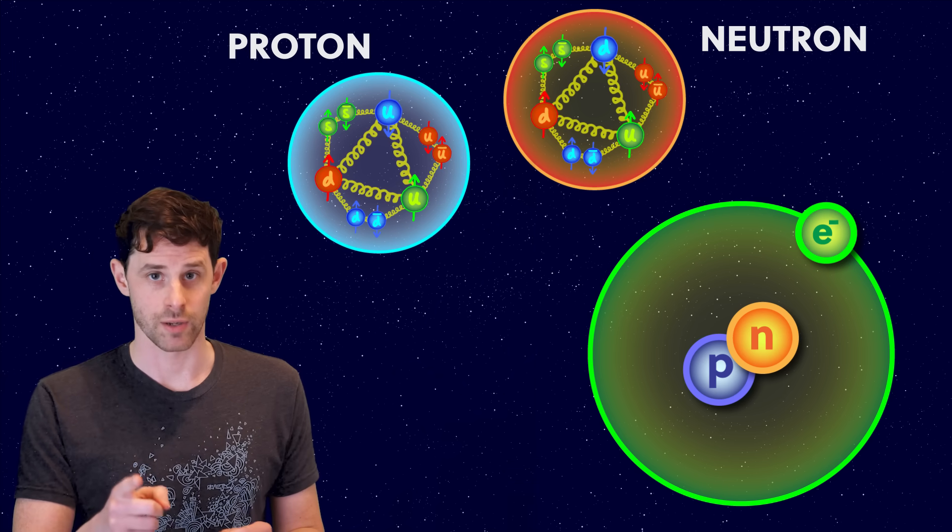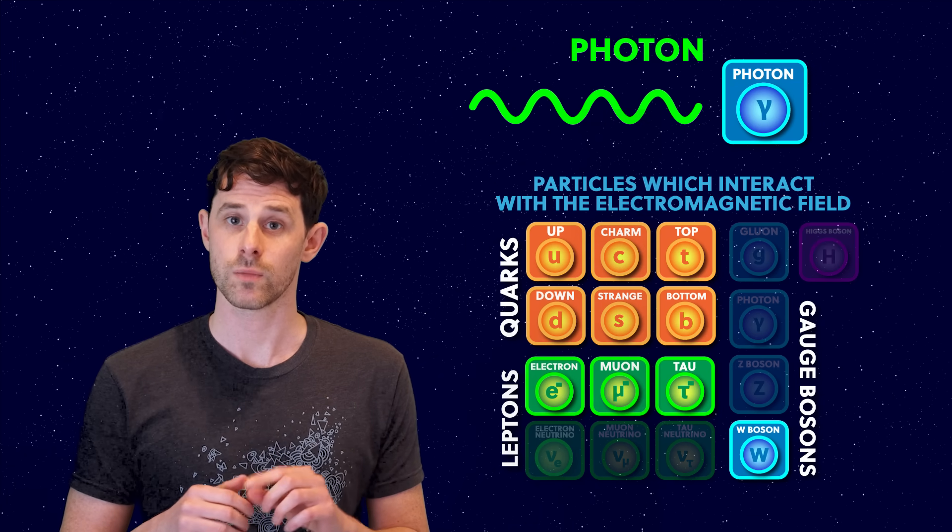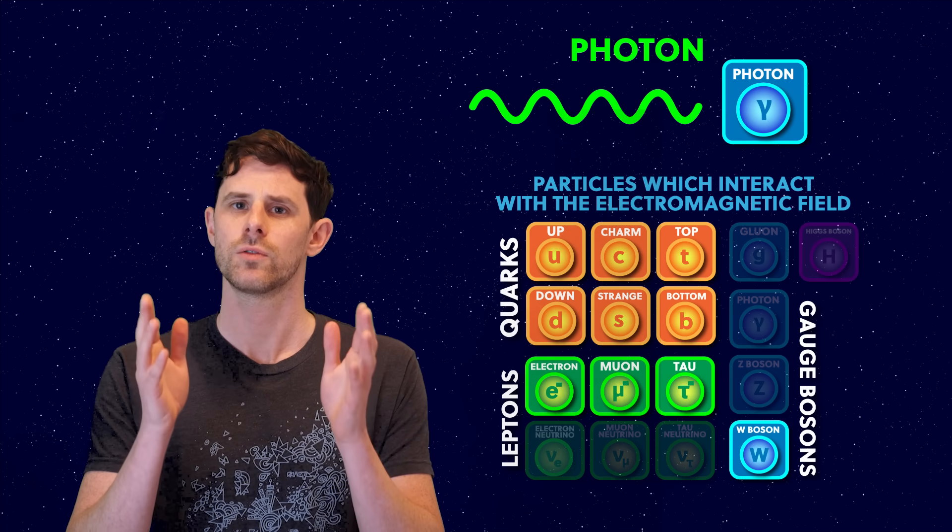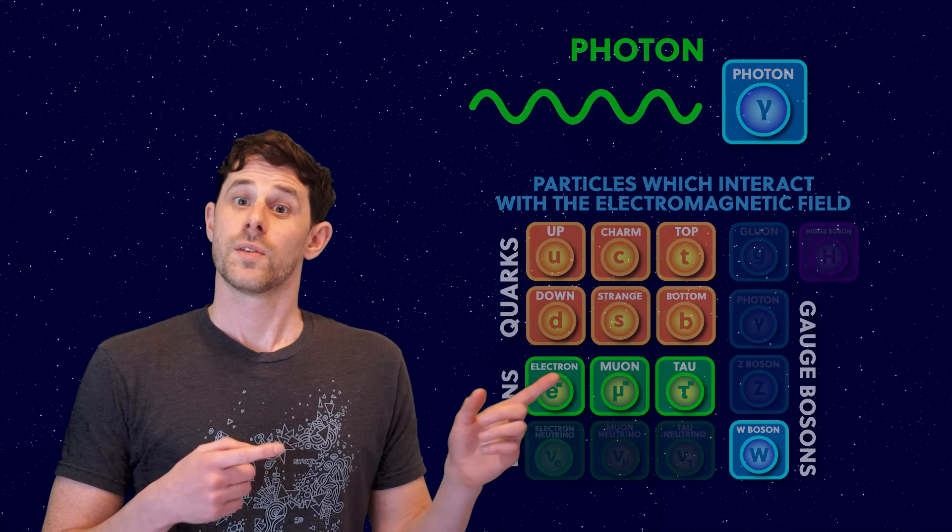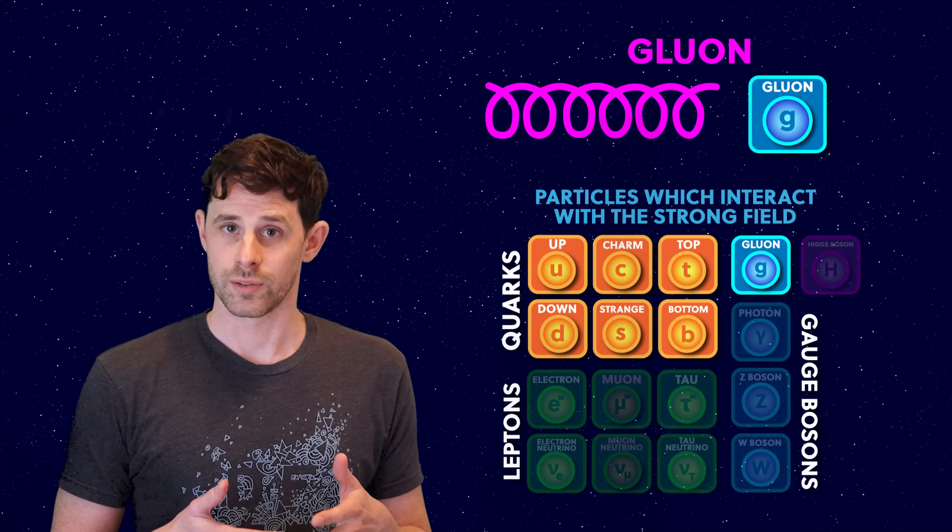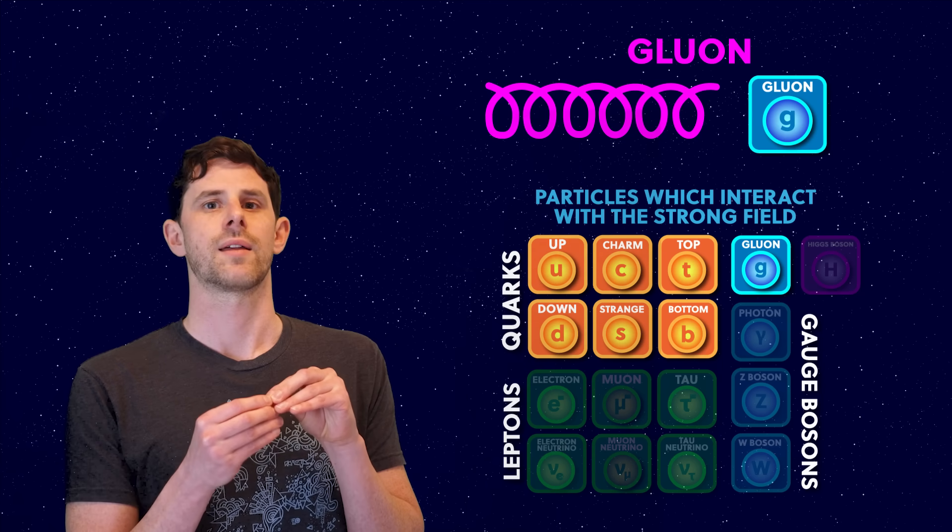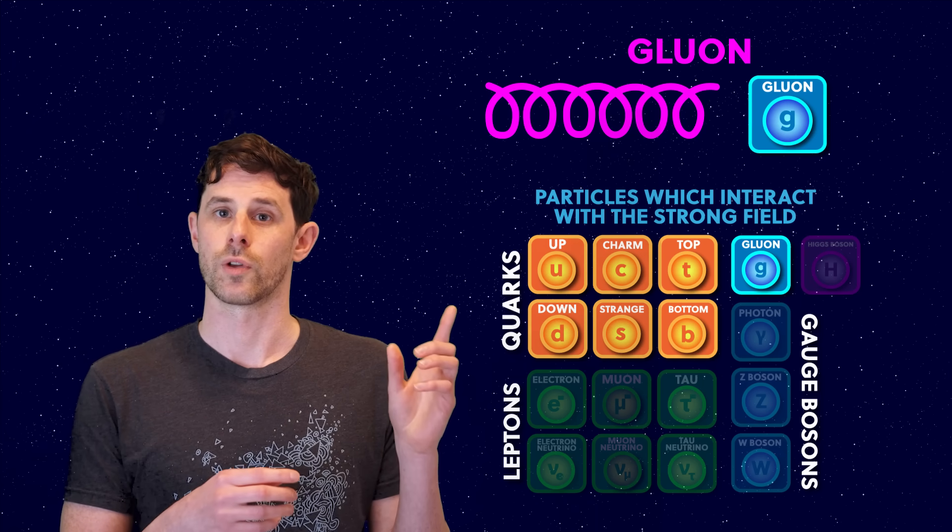The bosons, the force carriers, are all the other lines. We use a squiggly line for the photon, which is the force carrier for the electromagnetic field, and is the fundamental force mediating every single human experience. The spiral lines are for gluons, which carry the strong force that keeps the nucleus of atoms together, and interacts only with these specific fermions, which are called the quarks.